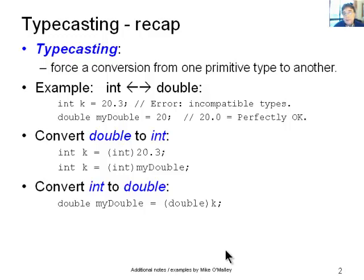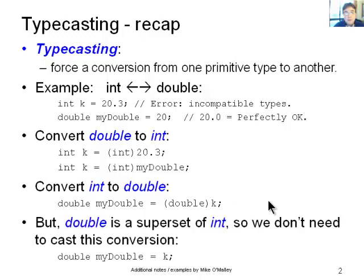If you want to convert int to a double, we could say double myDouble equals (double) k, and that's converting the integer to a double. But double is a superset of integers. It's all the integers plus all the values in between. So you don't actually need to worry about doing a conversion there. myDouble equals k and that's perfectly okay. That's a typecasting recap. That should all be familiar to everybody now.